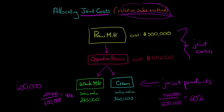So basically we're saying if we add up the sales value for each of these joint products and then take the percentage that each product represents relative to the total $600,000, we'd have 40% of the relative sales value for the whole milk and 60% for the cream.